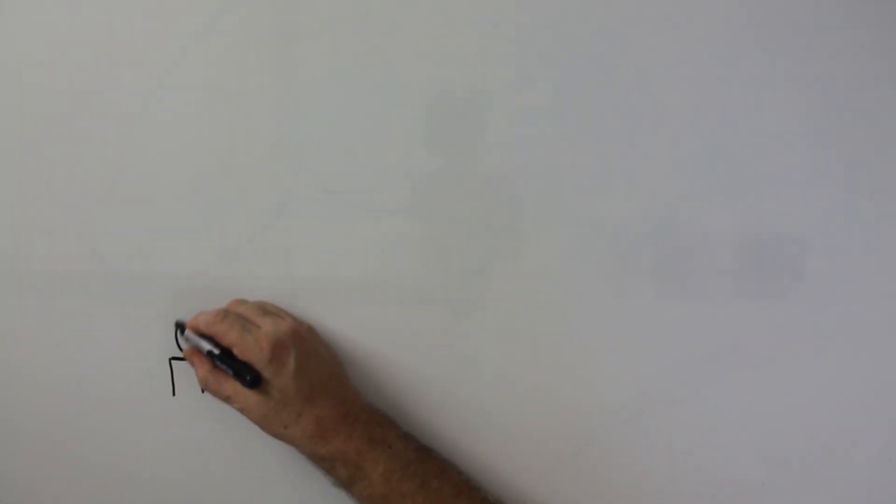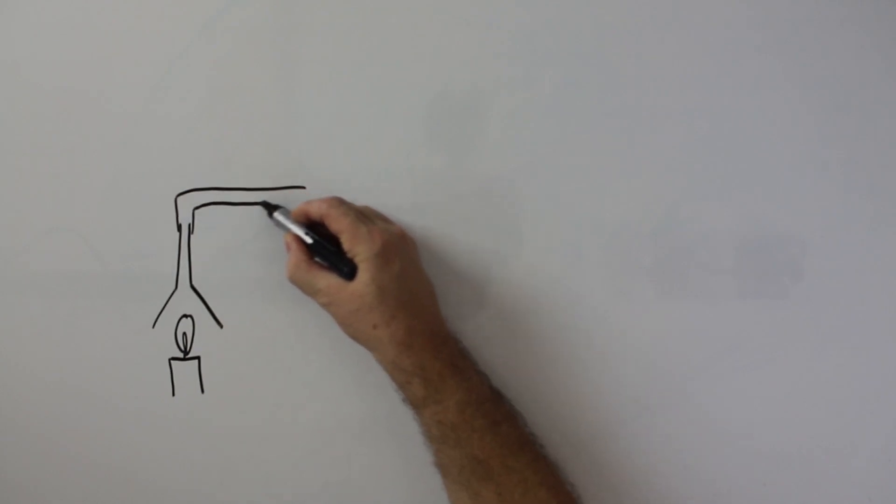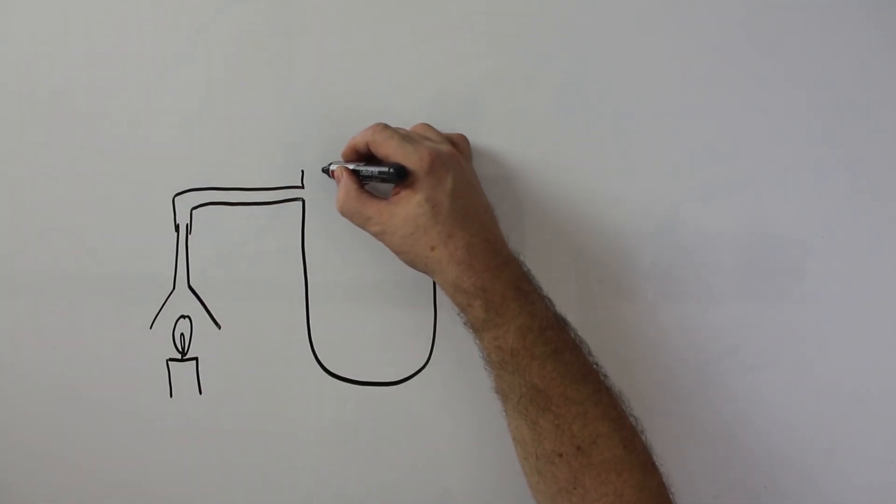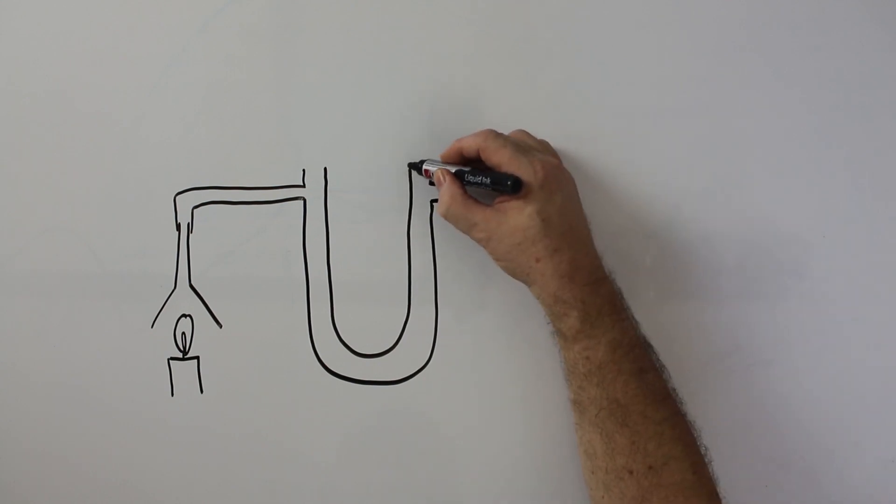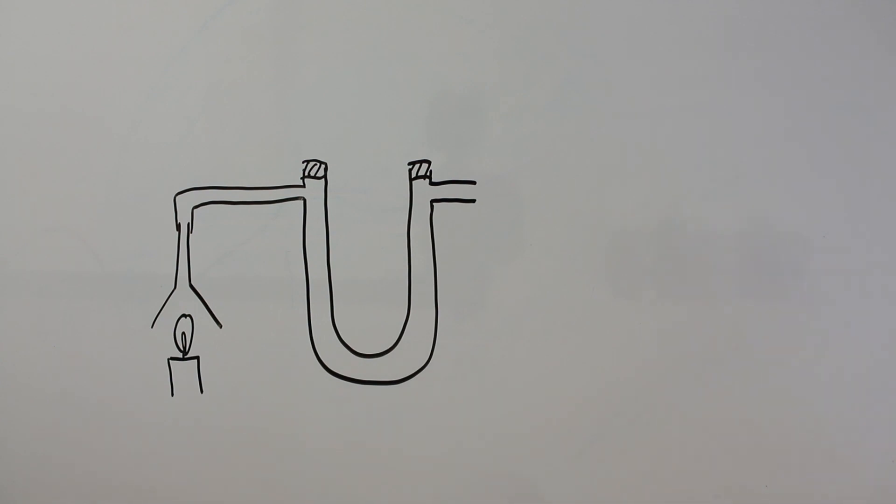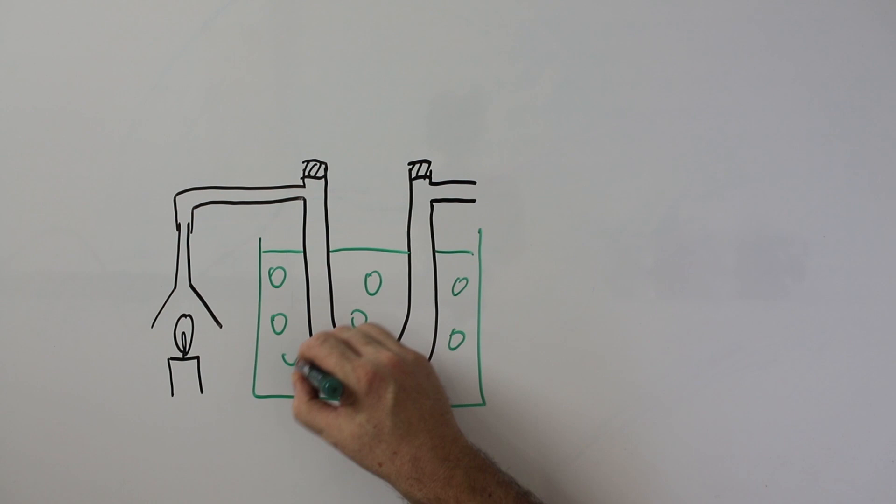We start off with a candle and this has over it a funnel which is connected by a tube to a U-tube. Let's put a bung in there and there. This we can stand inside of a beaker and this beaker contains some ice and some water.